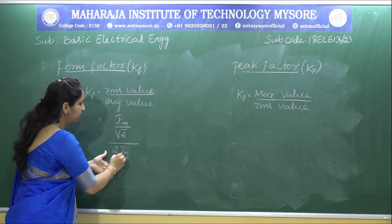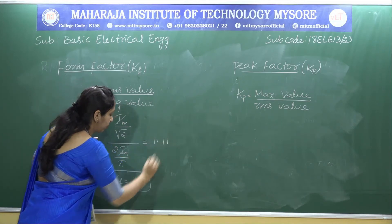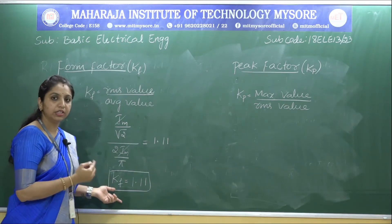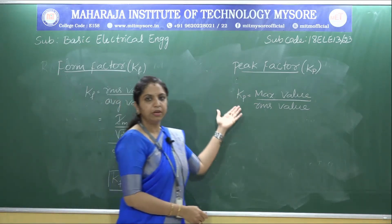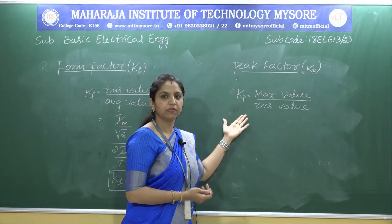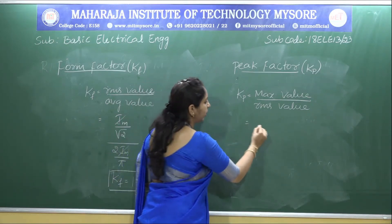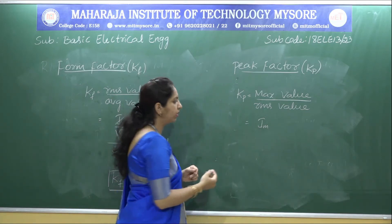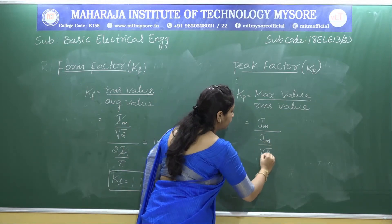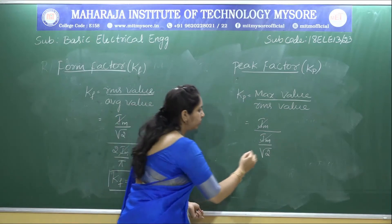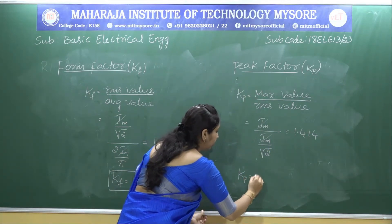Simplifying the form factor expression confirms K_f = 1.11, which is always a constant. Similarly, peak factor K_p is defined as the ratio of the maximum value to the RMS value. So K_p = I_M / (I_M/√2). The I_M terms cancel, giving K_p = √2 = 1.414. Peak factor is always 1.414. These form factor and peak factor values will be used to derive many expressions in topics such as transformers.